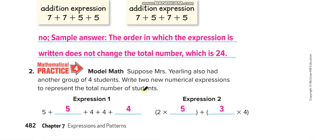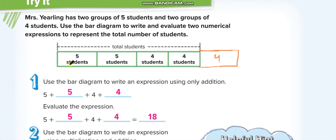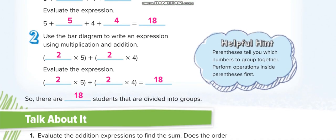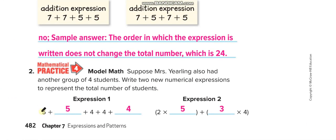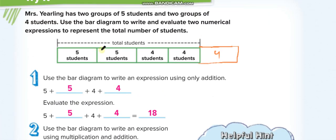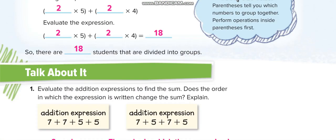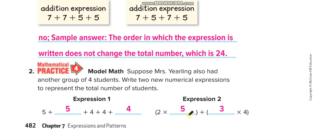Okay, now this one they are saying suppose Mrs. Yearling also had another group of four students. It means after these four, another group of four students extra. So now you have two fives and three fours. So you can write it in two ways. The first one simple: 5 plus 5, 4 plus 4 plus 4, simply addition—add all of them. And the second one, you have two 5s, so 2 times 5, and you have three 4s, so 3 times 4.